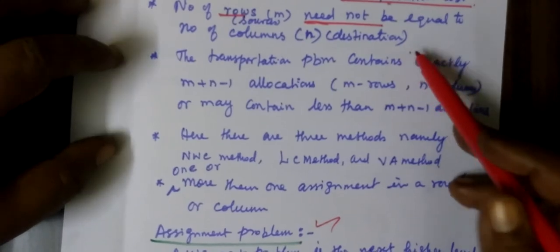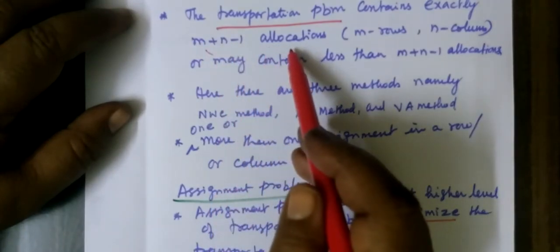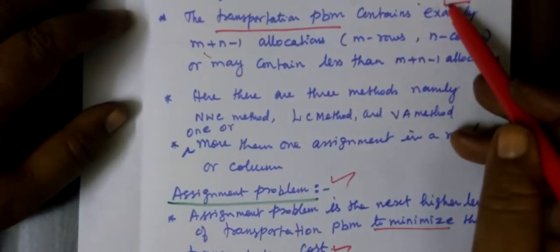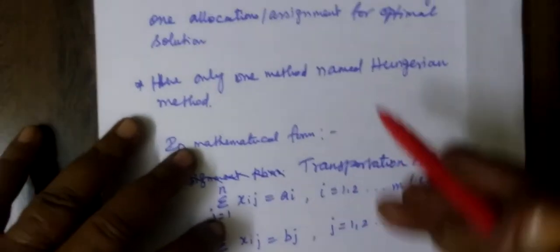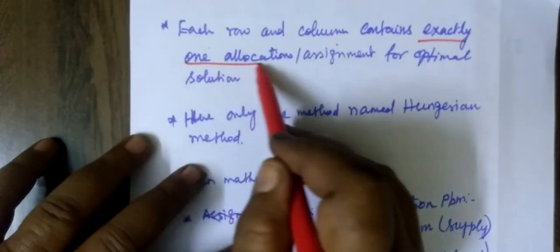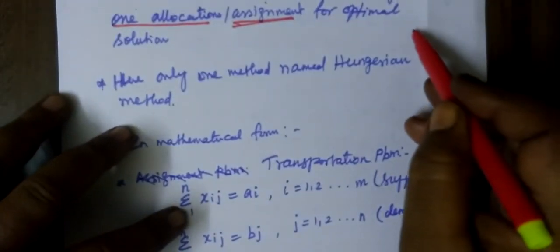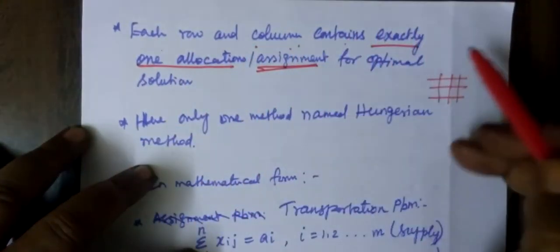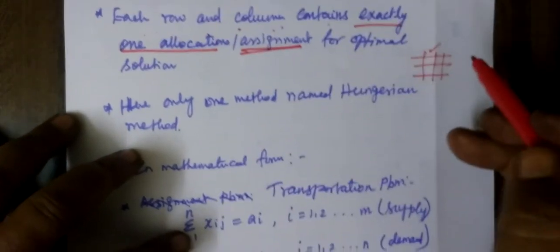So that is point number 1 and point number 2. In transportation problem, the number of allocations is M plus N minus 1. Each row and column contains exactly one allocation in the assignment problem. That allocation is the assignment for the optimal solution — each row and column contains exactly one allocation.